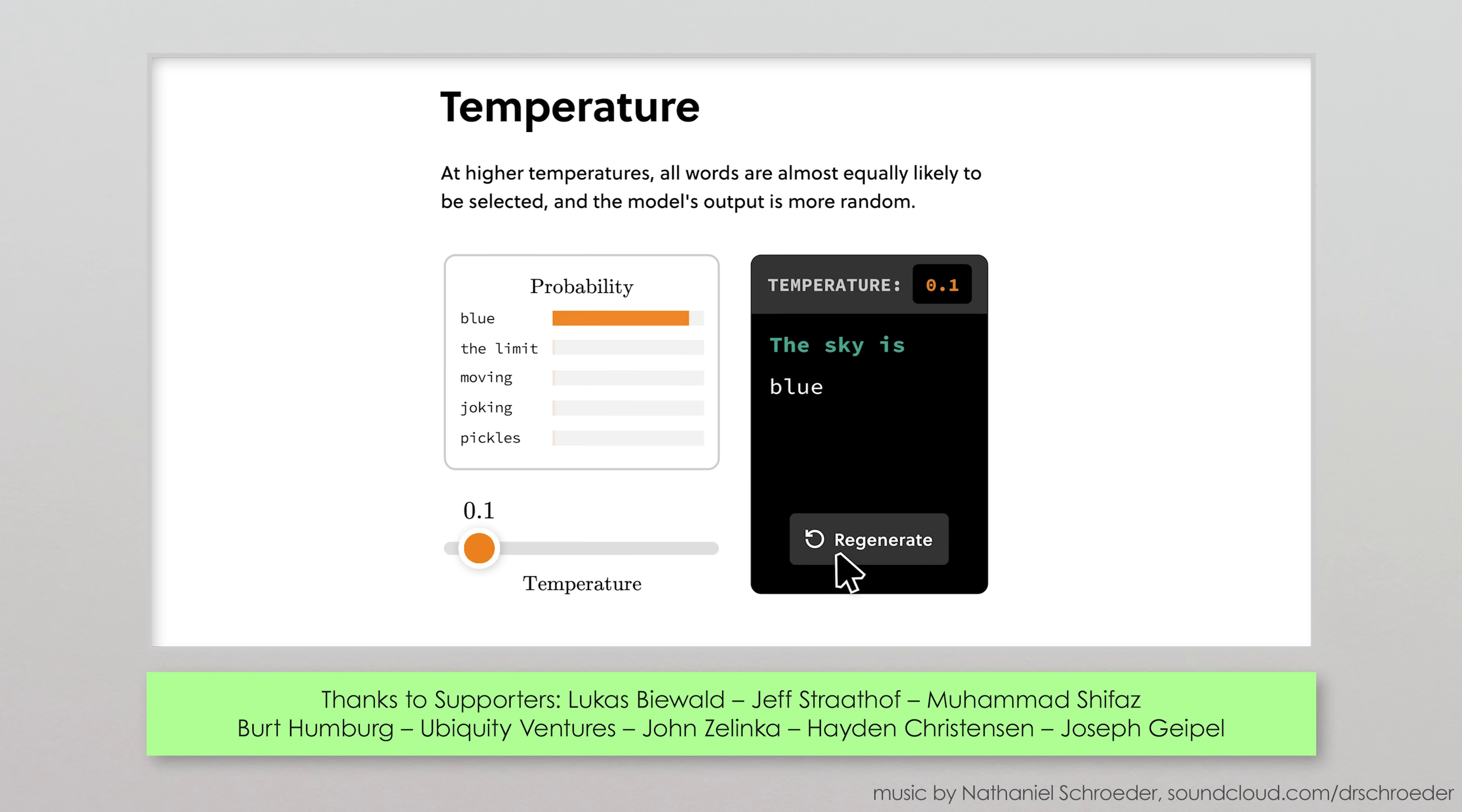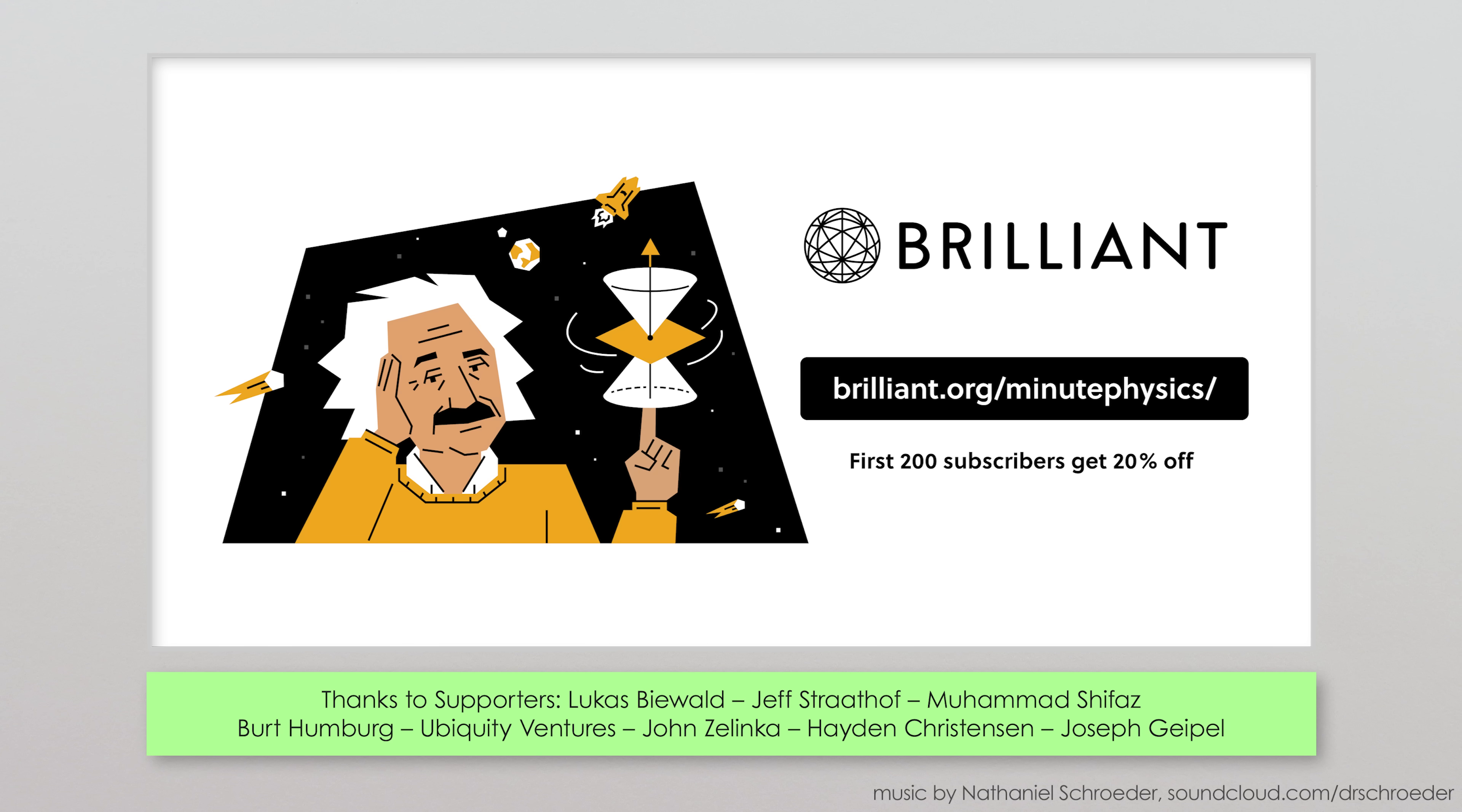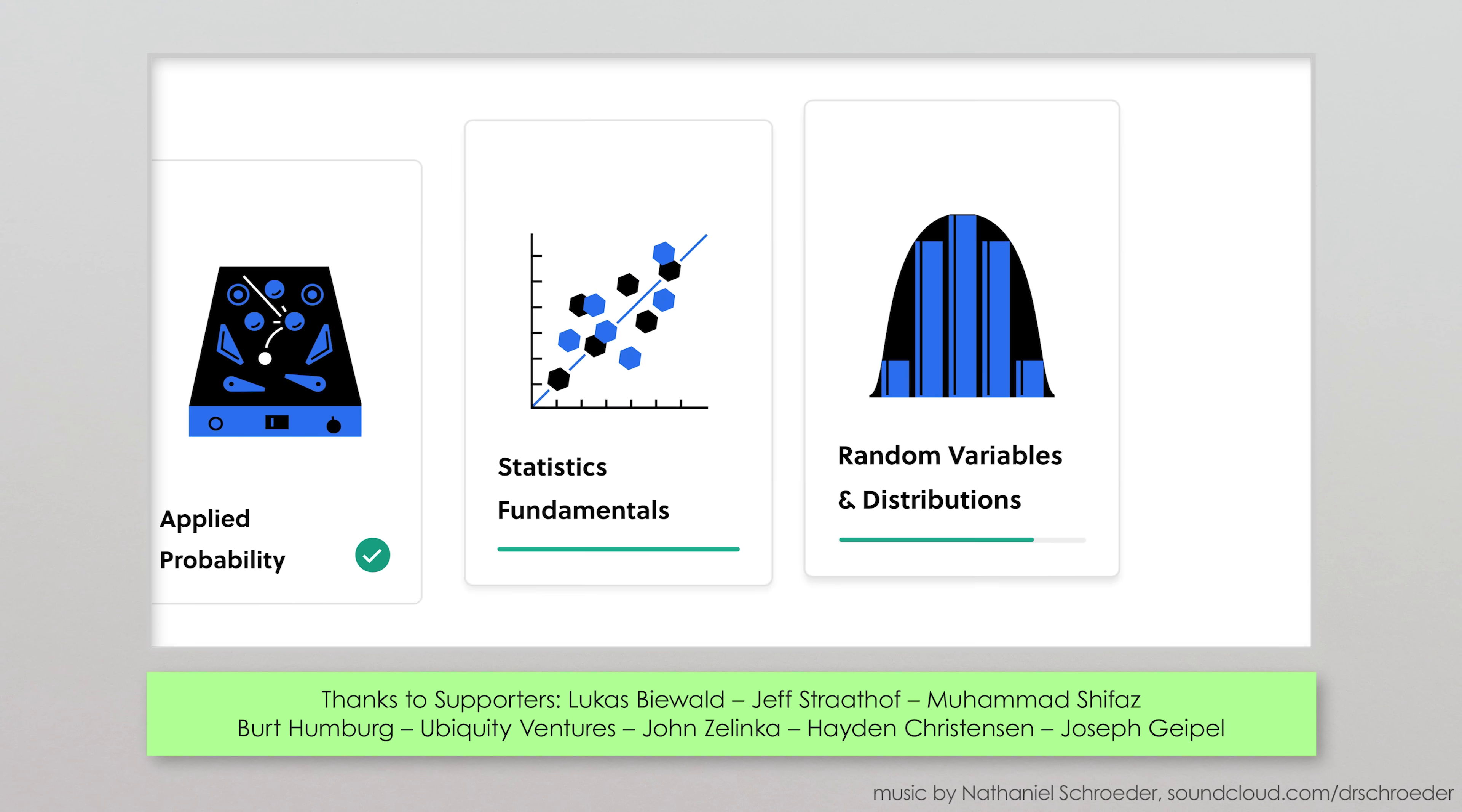I also went through their new course on how AI large language models like ChatGPT work, and I learned things like how changing the temperature setting of an AI can change its creativity. To sign up for Brilliant for free and get 30 days of full access to all of their courses, go to brilliant.org slash minutephysics. The first 200 people will also get 20% off an annual premium subscription for all of Brilliant's content, including the new courses they regularly add.